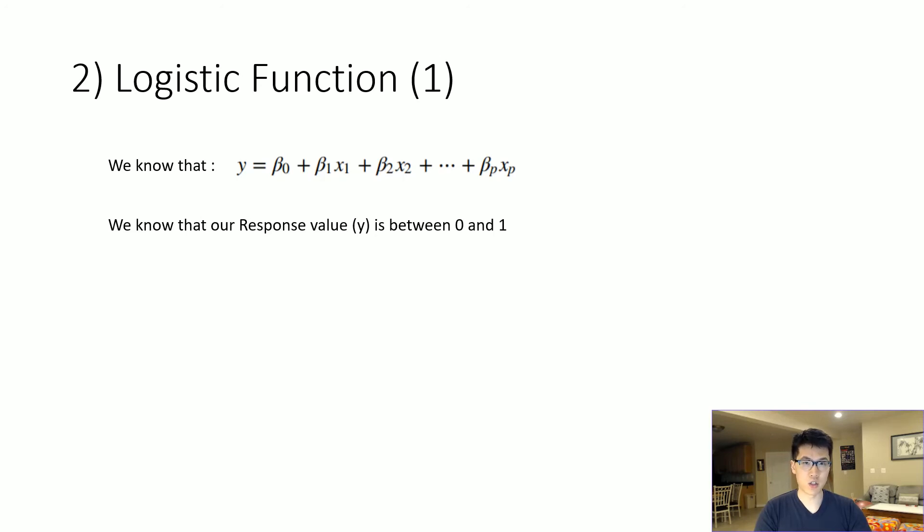Next we want to plug in our y variable into a logistic function. We do this because we want to essentially normalize our data between zero and one to essentially come up with a probabilistic scale and normalize all of our data. Thus we will just transform our data such that it fits our criteria - our response variable being between zero and one.